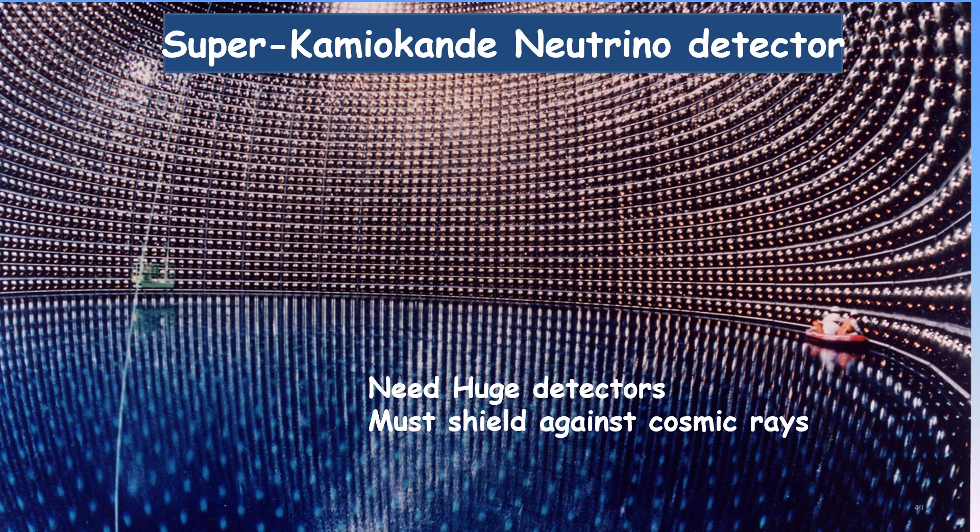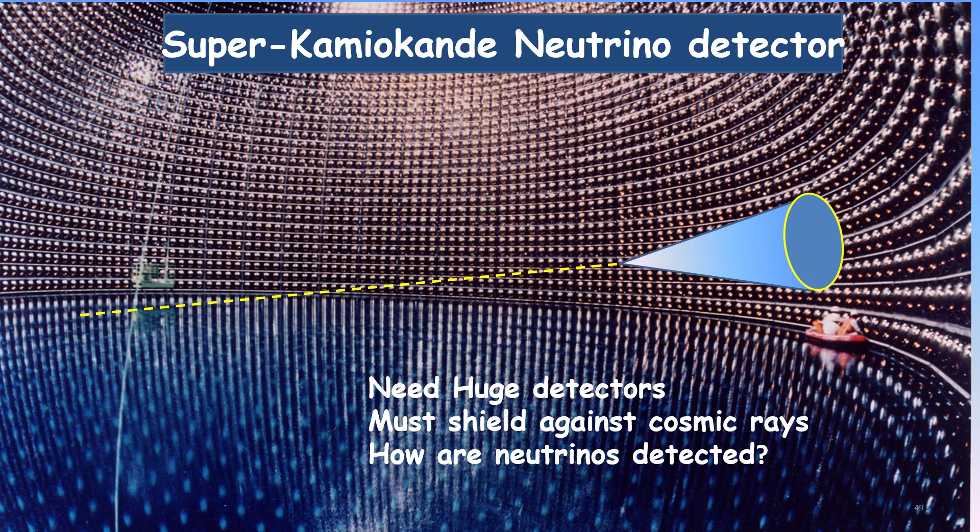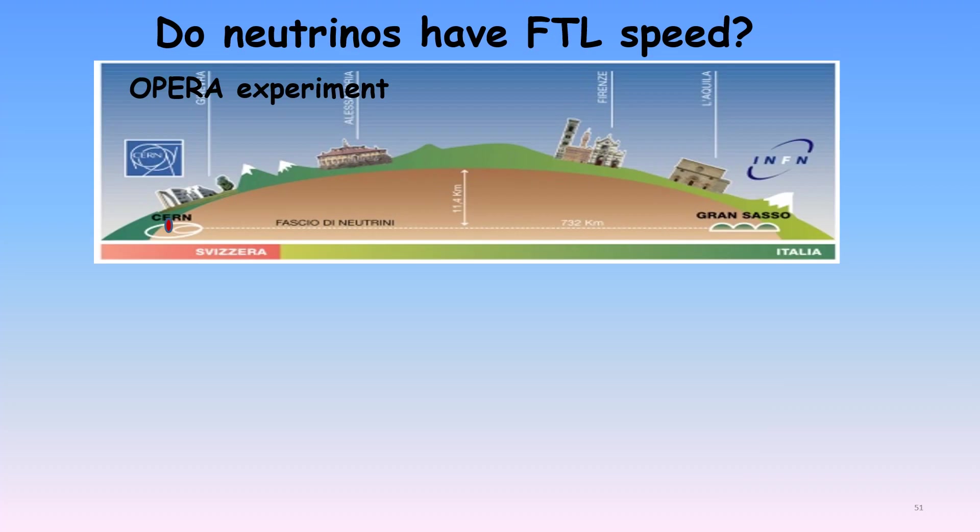Suppose a neutrino enters Super-K from the left and knocks loose an electron from an atom that travels roughly in the original neutrino direction. If that electron speed is faster than light in water, it would create Cherenkov radiation. That Cherenkov shock wave would then activate a circular ring of photosensors lining the walls. The neutrino energy can be measured based on the number of sensors activated.